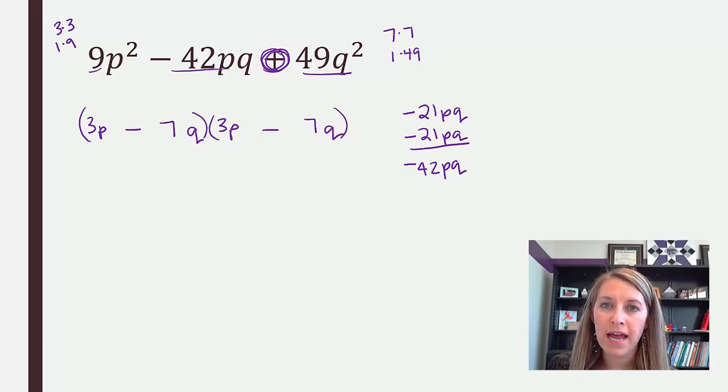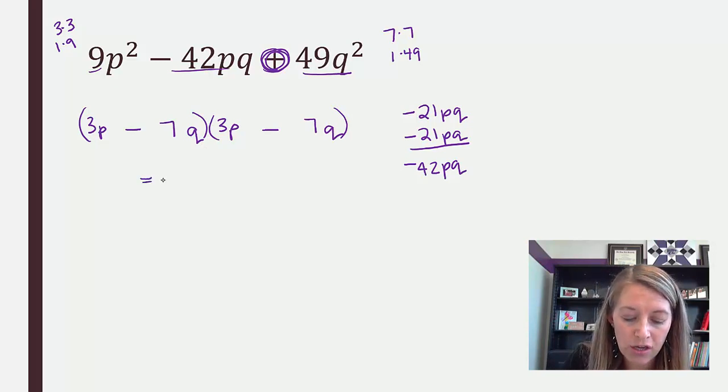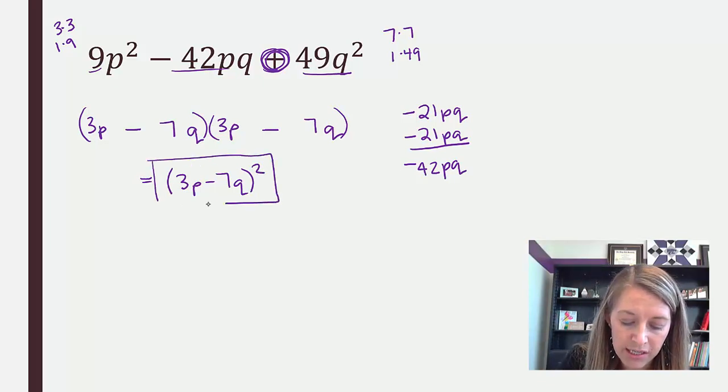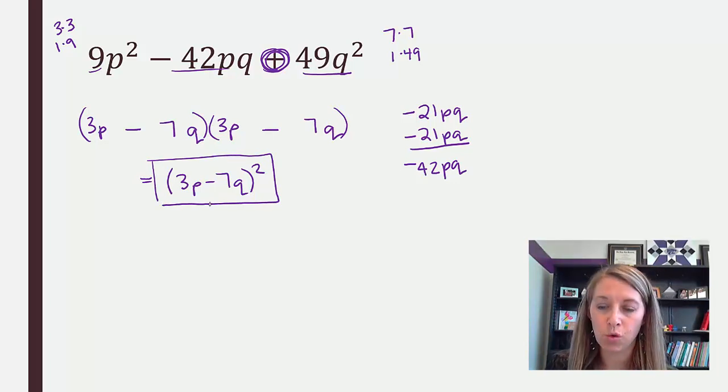Now, the reason that this is classified as a special trinomial is if we look at it in further investigation, we know that our factors are identical. So if we ever have identical factors, then we can actually factor them just a bit farther. We can condense them down and say this is my factor squared. So that's why this one is classified as a special trinomial. So if it's ever identical factors, just condense it down and put it as that factor squared.